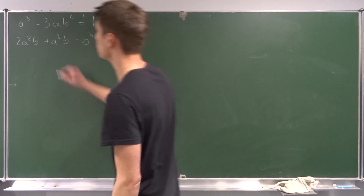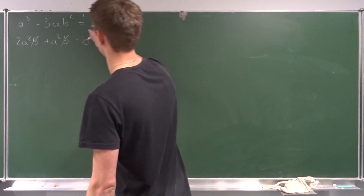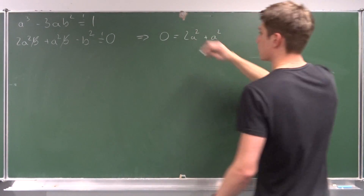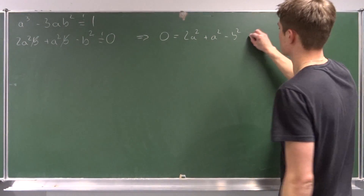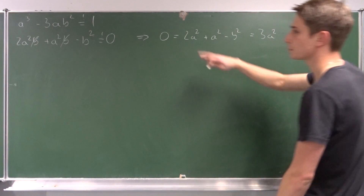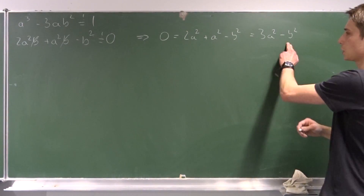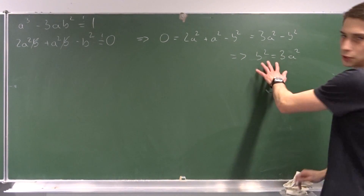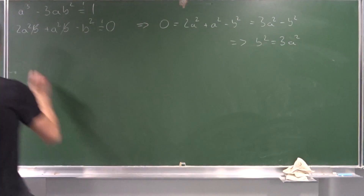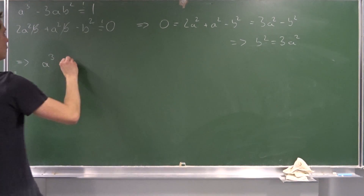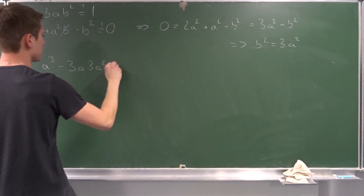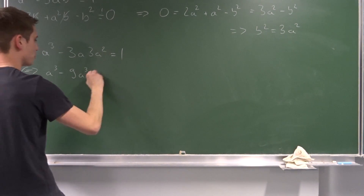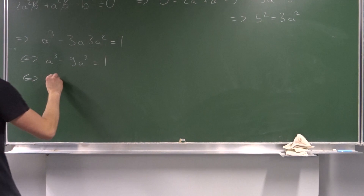Starting with the imaginary equation — that's the easier one — under the condition that b is not zero, we can divide through by b. That gives us zero equals three a squared minus b squared, so b squared equals three a squared. We leave it there and plug this into the real part equation: a cubed minus three a times three a squared equals one, which simplifies to a cubed minus nine a cubed equals one, giving minus eight a cubed equals one.